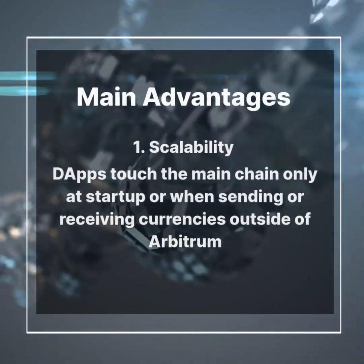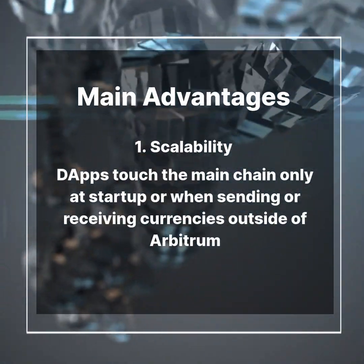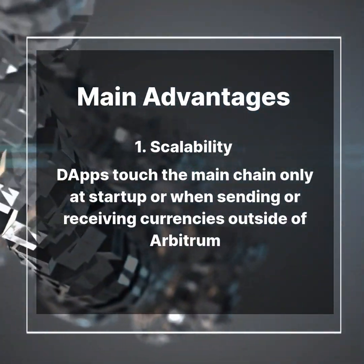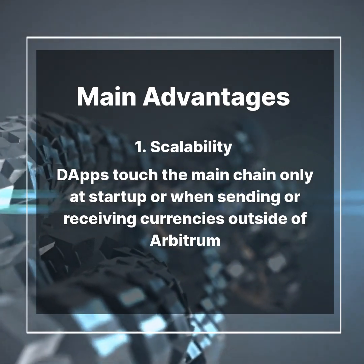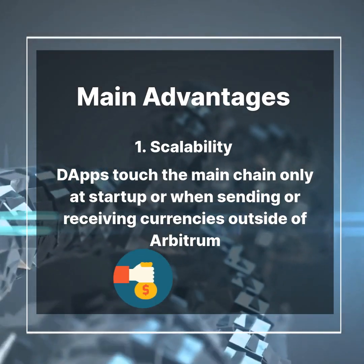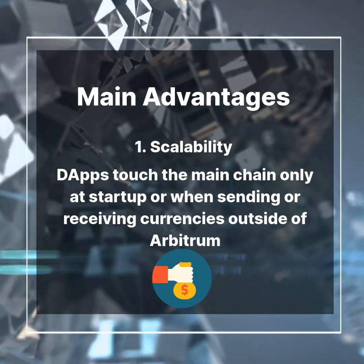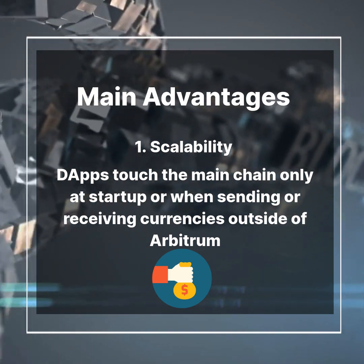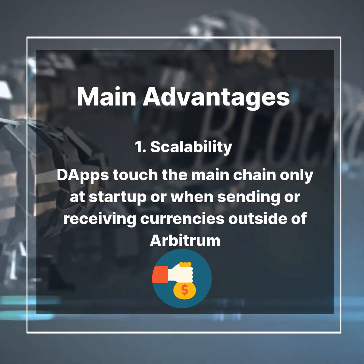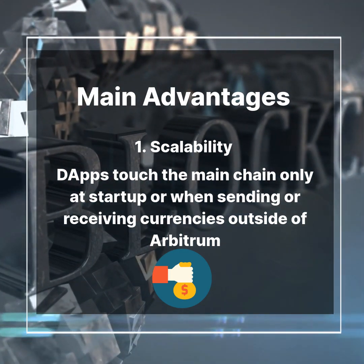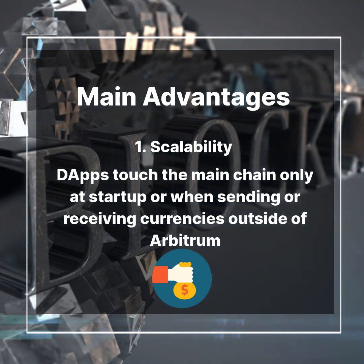Arbitrum has four main advantages. First, its scalability allows dApps to touch the main chain only at startup or when sending or receiving currencies outside of Arbitrum. Other activities can be completely off-chain. Even if an exception does occur, the burden on the main chain is less than with other solutions.